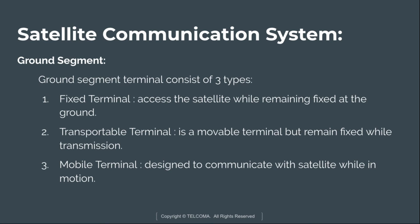The ground segment terminal consists of three types. The first is the fixed terminal, which communicates with the satellite while remaining fixed at the ground. The fixed terminal provides different types of services and does not move while communicating with the satellite. Examples include VSATs and terminals mounted on buildings used to broadcast satellite signals.